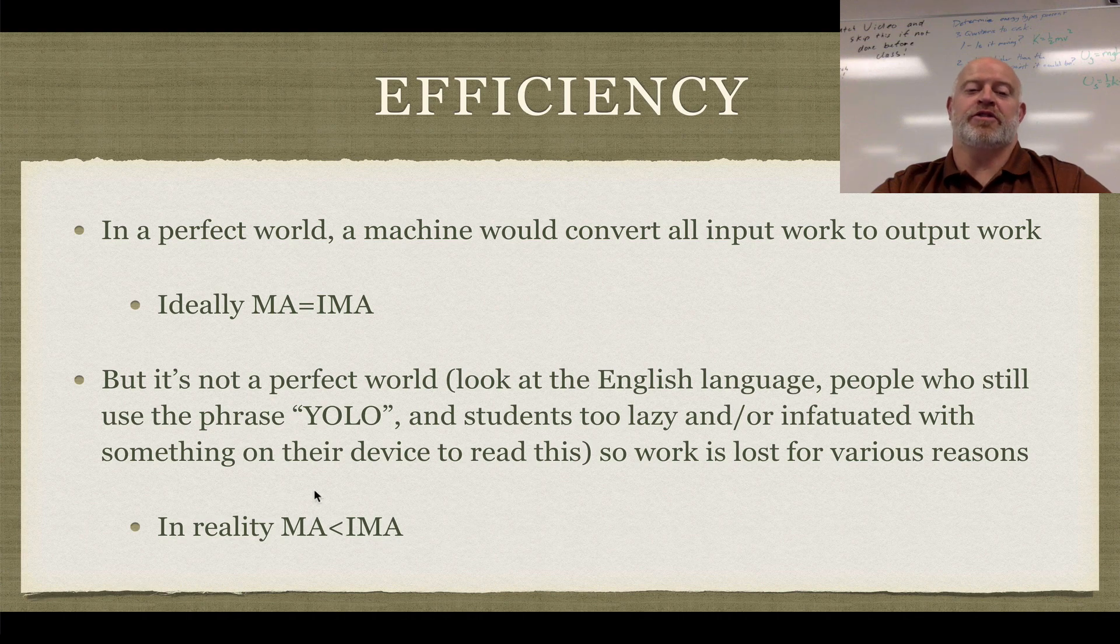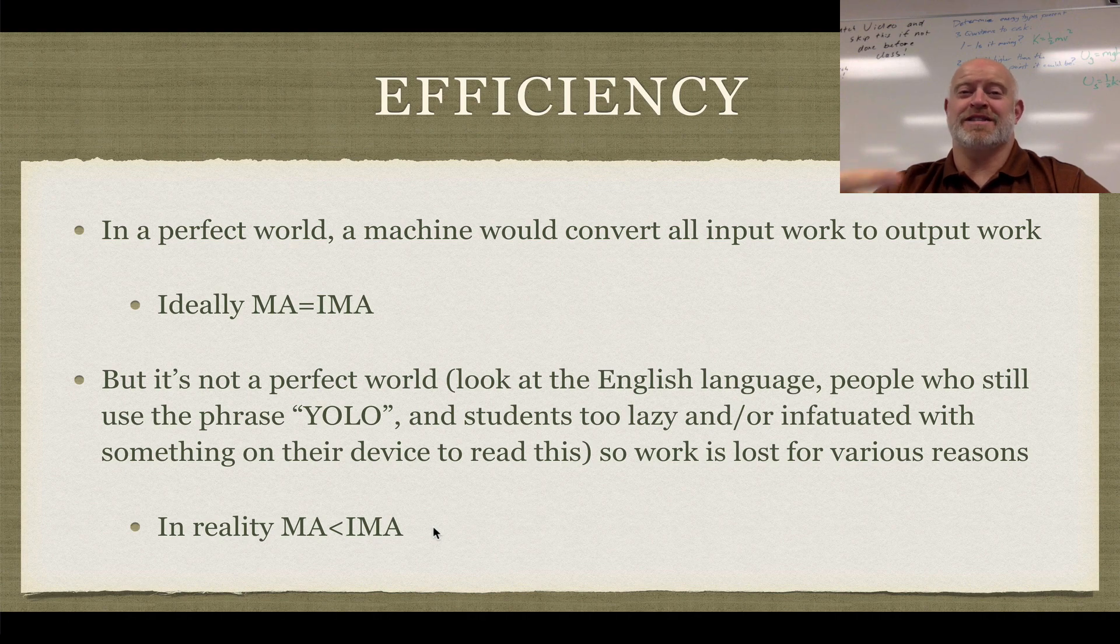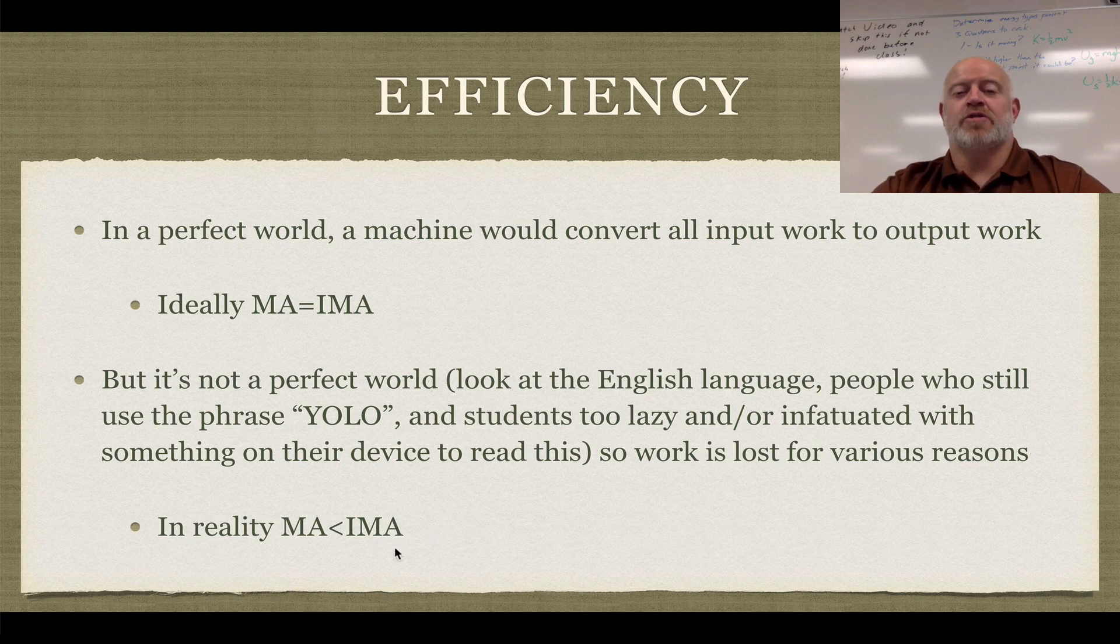If you ever get a scenario where you think your mechanical advantage is greater than the ideal mechanical advantage, either A, you got it wrong, or B, you just broke the laws of physics, and if you're right, you're going to make billions and billions of dollars. So I'm guessing it's going to be A, though. So let's take a look and see how that affects us in terms of our efficiencies.